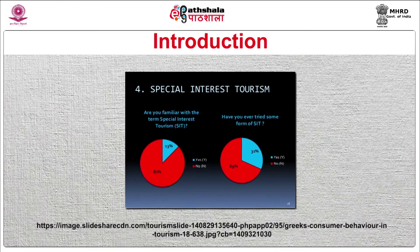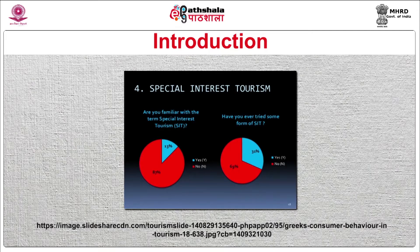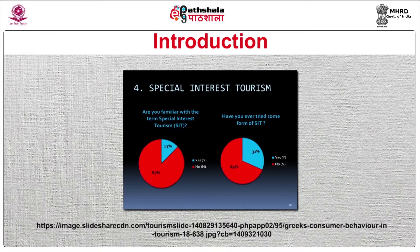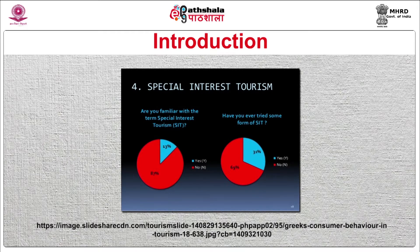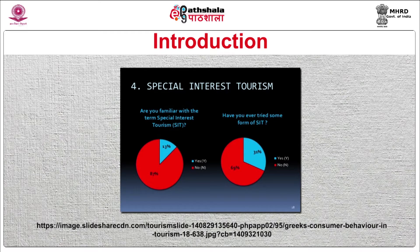A special interest tourist chooses to engage with a product or service that satisfies particular interests and needs. Special interest tourism is tourism undertaken for a distinct and specific reason. The distinguishing features include the focus on specialist hobbies, interests and activities, the range of which is very diverse — from bird watching to military history, golf to opera, to bungee jumping.